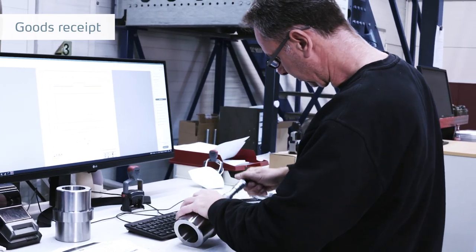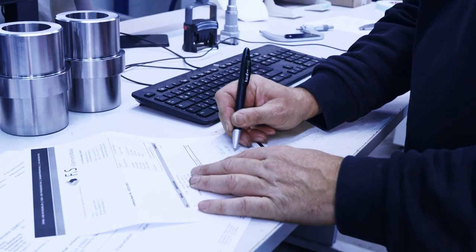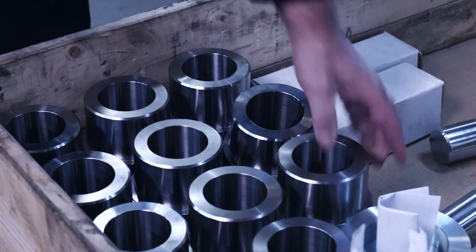In goods receipts, purchase parts are checked and approved. These include mechanical, electronic engineering, and sensor technology parts. These articles are then included directly in the orders or they are placed in storage.